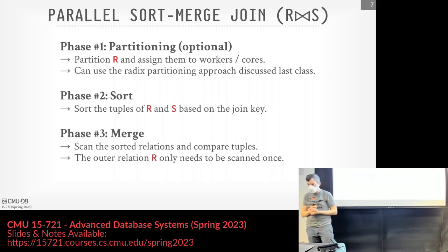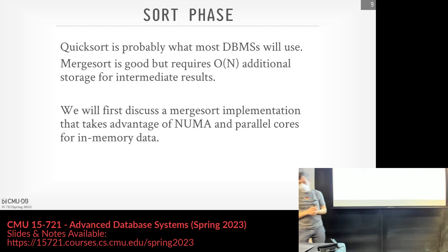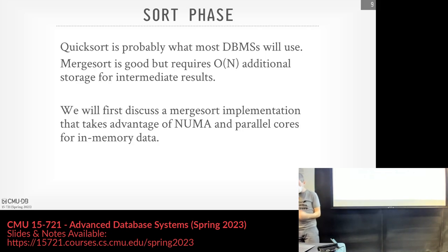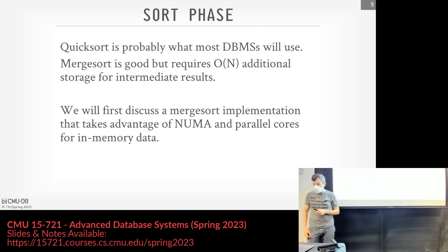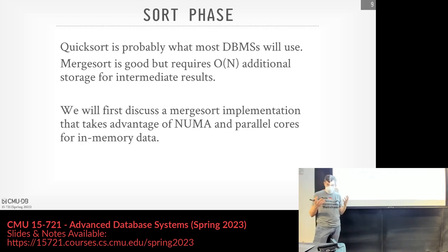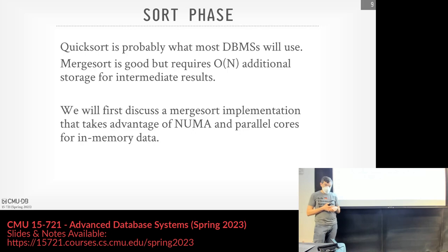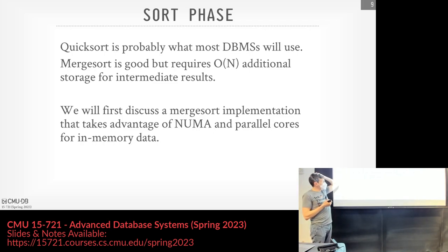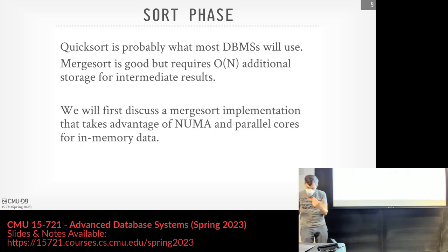For the sort phase, quicksort is what most systems use. In the intro class we said disk was the main bottleneck and chose external merge sort to maximize sequential reads and writes. But here we assume the data fits in memory, so quicksort is actually a good idea. We'll look at merge sort because its building blocks — sorting networks — are used as an optimized shortcut even inside modern vectorized quicksort algorithms.